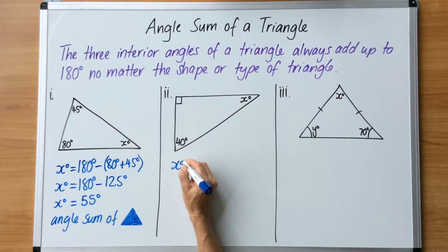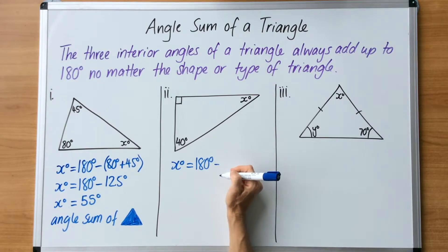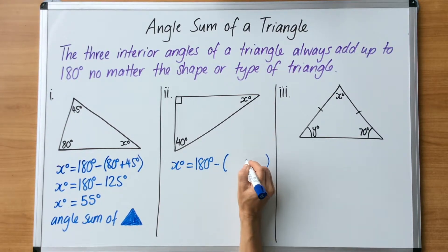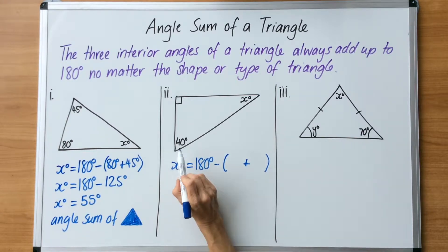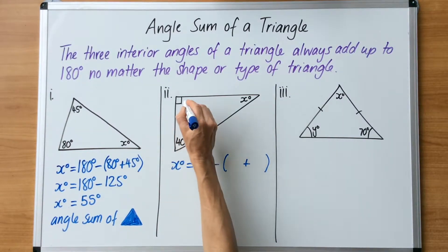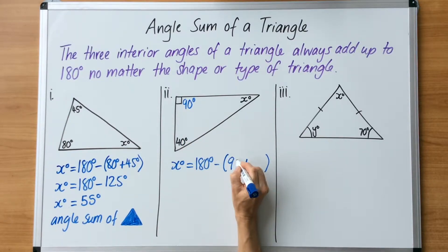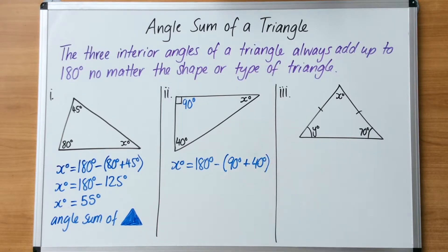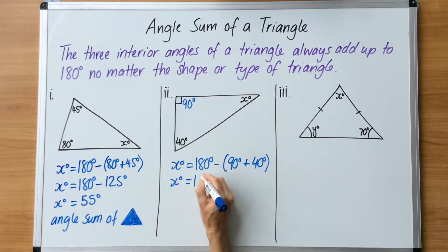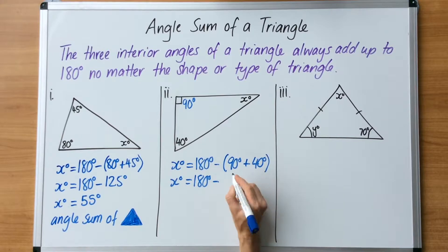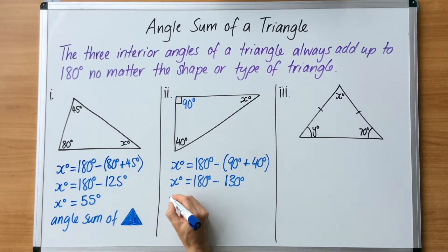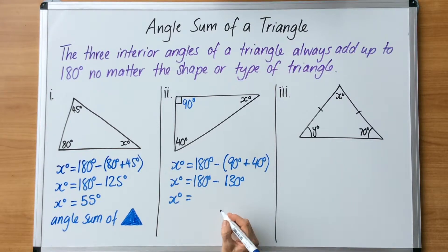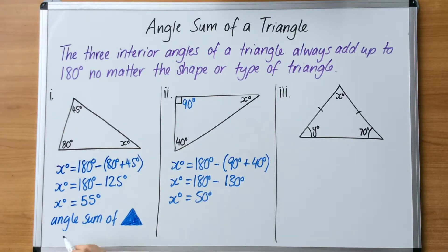The next one again: x degrees equals — we know the angle sum of a triangle is 180 degrees and we're going to subtract what we know. What we know is there's a 40 degrees and this little box here is 90 degrees because that's a right angle. So we add 90 degrees and 40 degrees together and subtract those from 180. x equals 180 minus 130 degrees, which gives us 50 degrees. You would write angle sum of a triangle at the bottom.